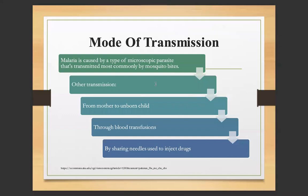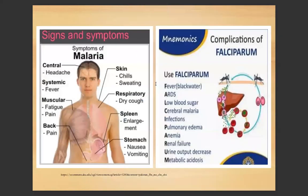The mode of transmission: malaria is caused by a type of microscopic parasite transmitted most commonly by mosquito bites. Transmission also includes mother to unborn child, through blood transfusion, and by sharing needles used to inject drugs. Signs and symptoms of malaria include headache, systematic fever, chills and sweating, dry cough, enlargement of the spleen, nausea and vomiting, back pain, and muscle fatigue and pain.